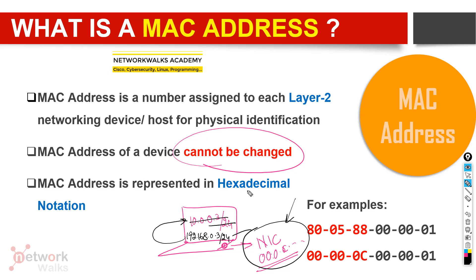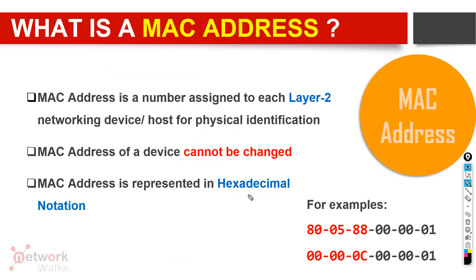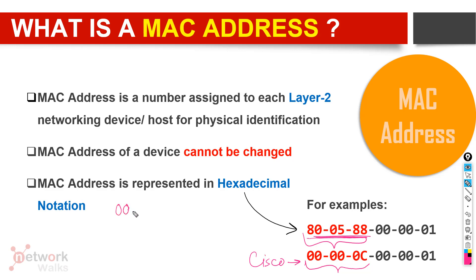A MAC address is always represented in hexadecimal notation, as shown here. It has two portions: the first portion tells us which vendor the MAC address belongs to. We can search online — for example, this second one belongs to Cisco, because Cisco has that series registered for them. When Cisco manufactures devices, they assign MAC addresses in that series: 00-00-00-00-00-01, 00-00-00-00-00-02, 00-00-00-00-00-03, and so on in hexadecimal.